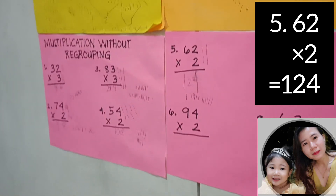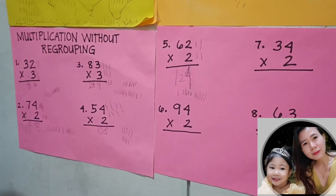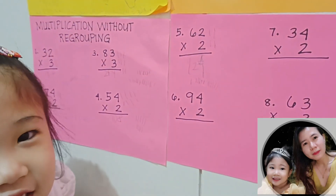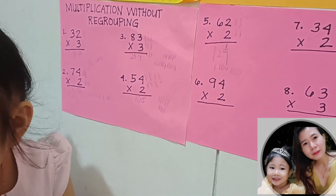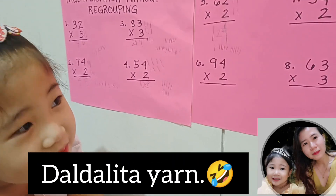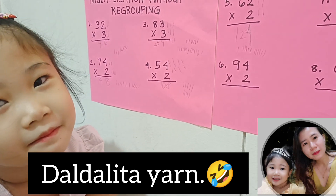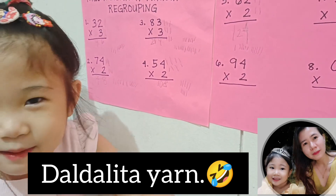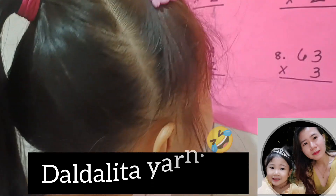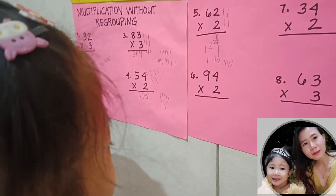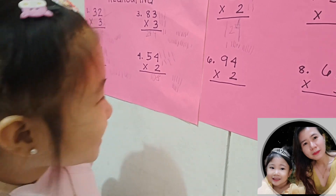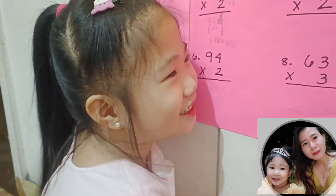Number six. What is this? It's a multiplication without regrouping. Okay, you can do number six. Oh, mom. Okay. You need something on the way for the haircut now. Finish that first. Go. Number six: 94 times three. Okay.